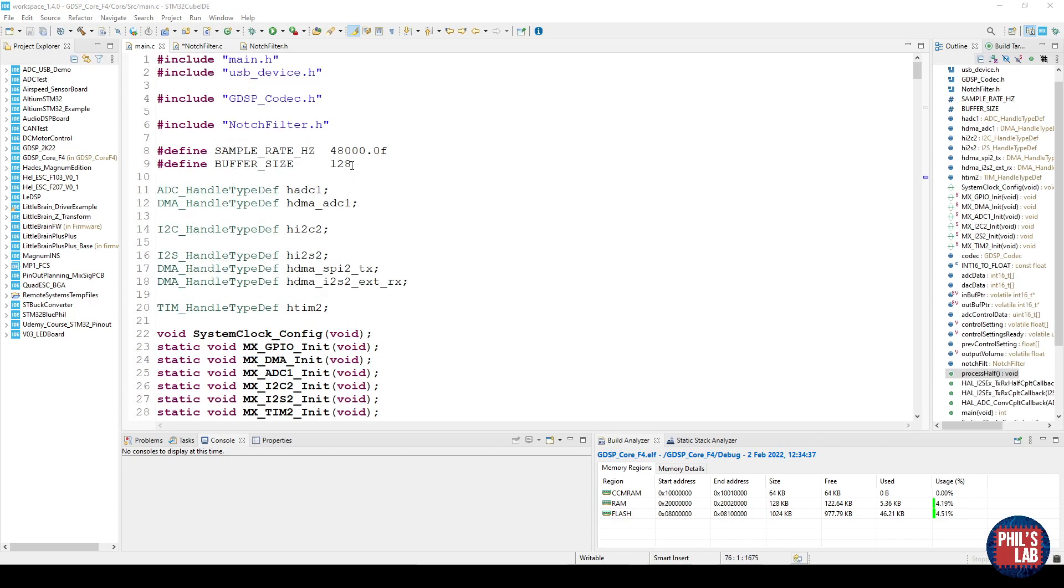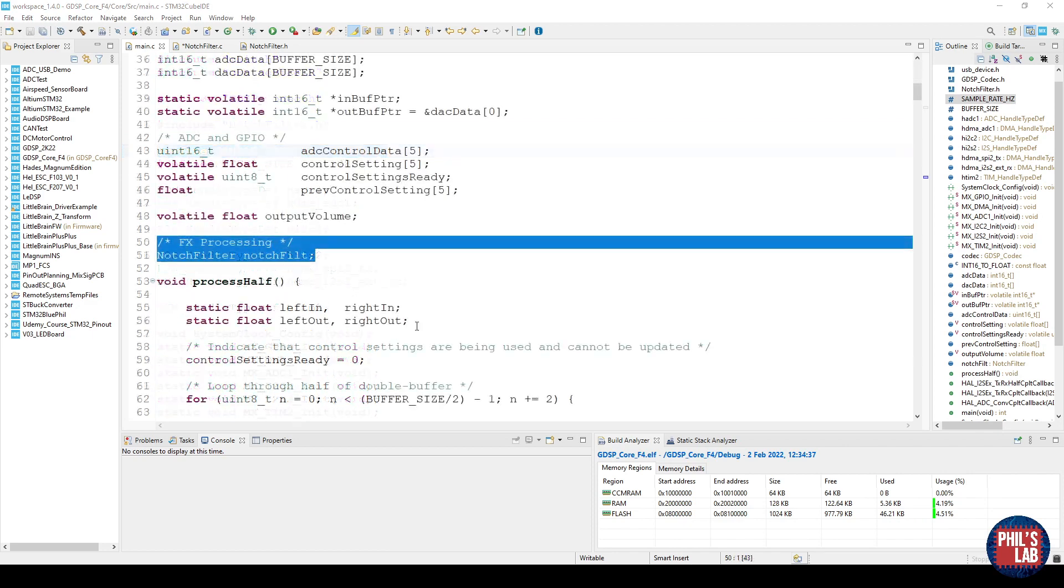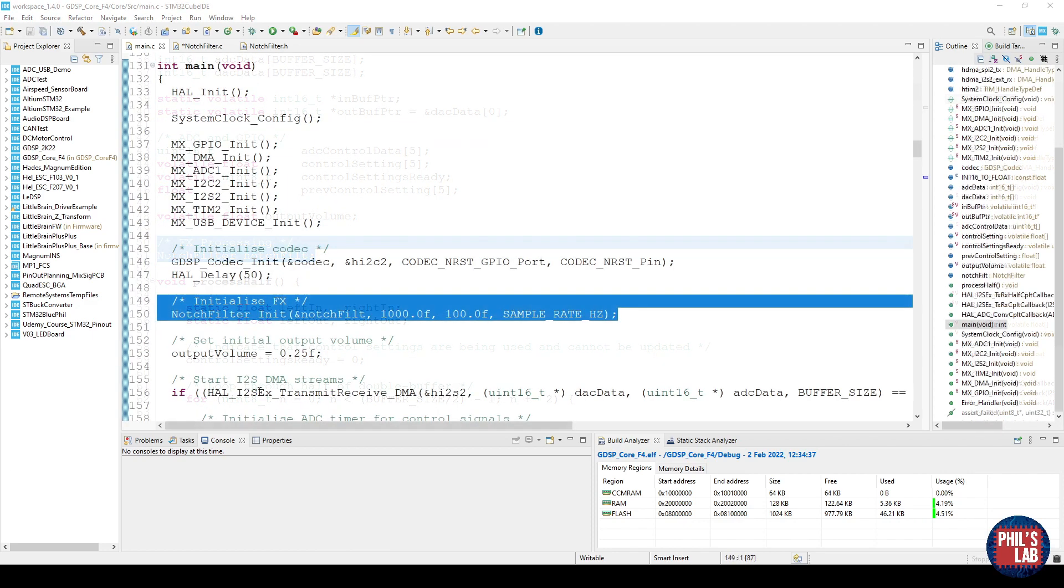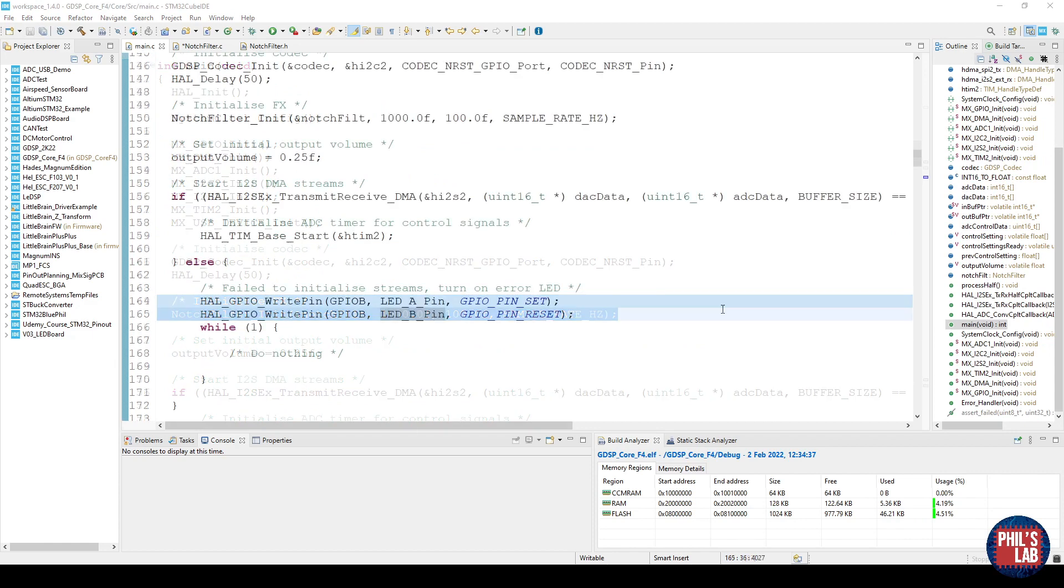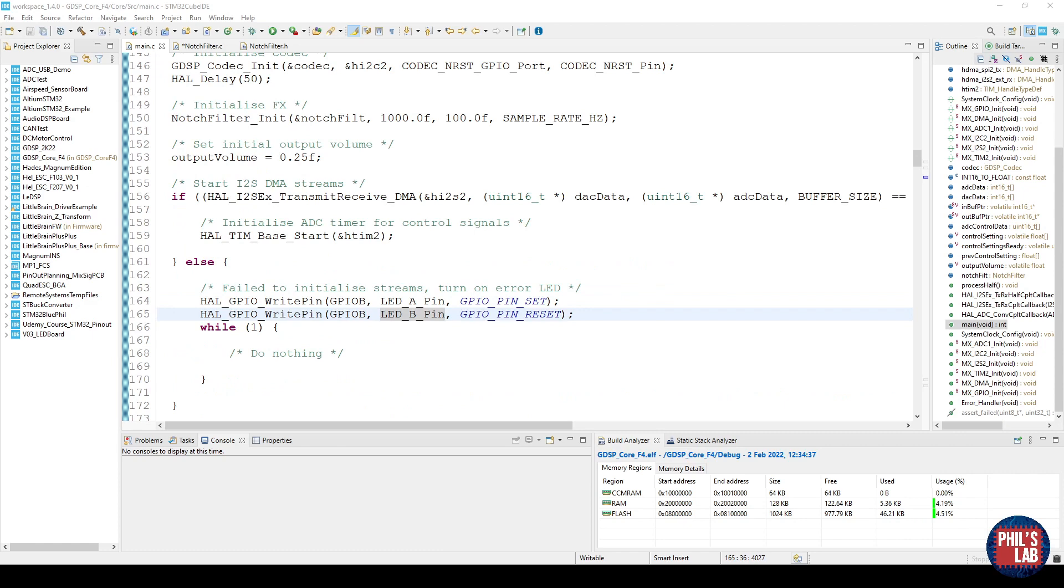So all we need to do then in main.c is include our notch filter, we've defined our sample rate, we've defined our notch filter struct. In our main function we've initialized the effects and this is just nominal values because we'll be making them variable. Then of course we start the I2S streams which will then give us callbacks when we can process the data.